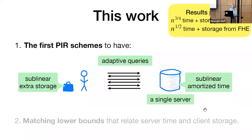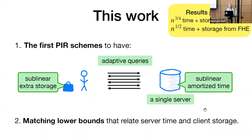As a quick preview of our results: we give a scheme from DDH in which our server runs in amortized time n^{3/4} and our client has n^{3/4} extra storage. Then from FHE, we can do even better — our server runs in amortized time √n and our client has extra storage √n. We also give new lower bounds on any PIR scheme in the many-query setting that relate server time and client storage, and these bounds show that our most efficient FHE-based scheme is in fact optimal with respect to this trade-off.